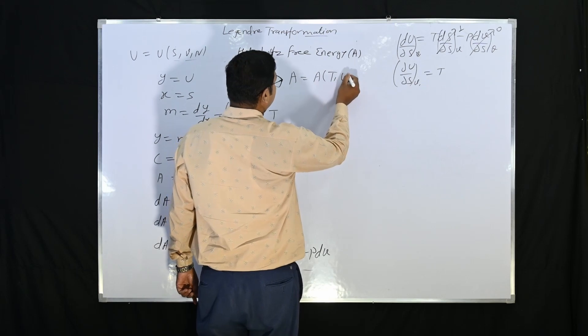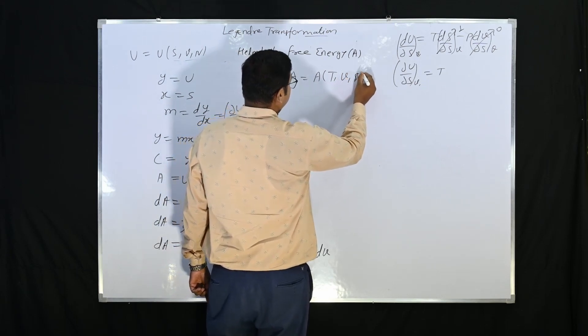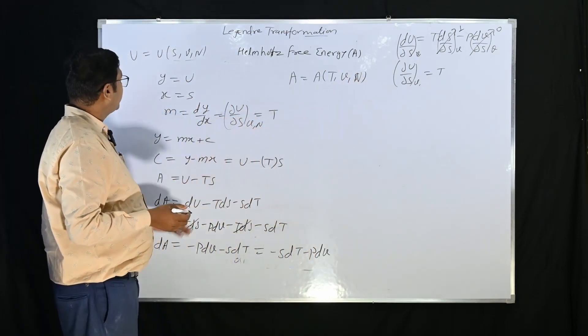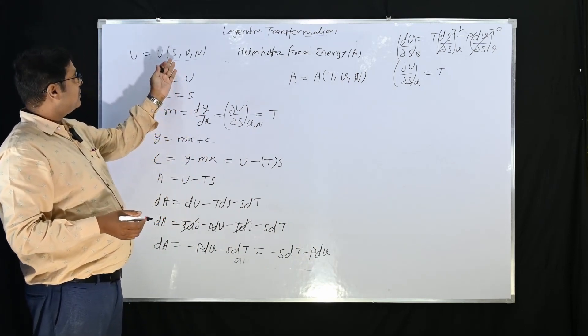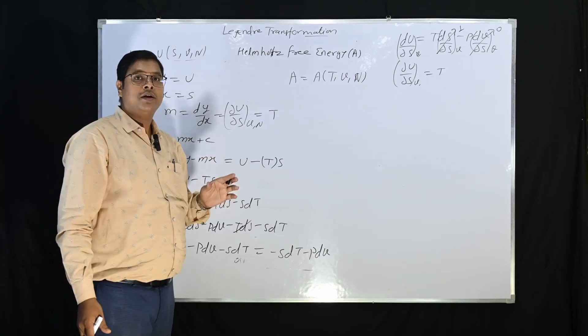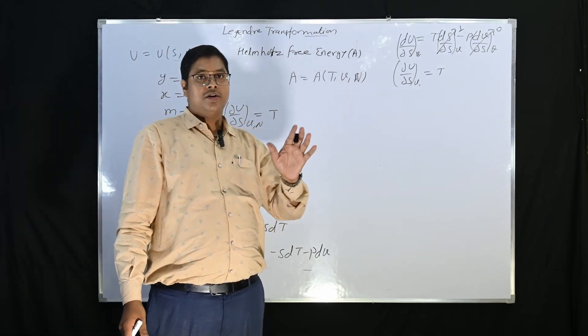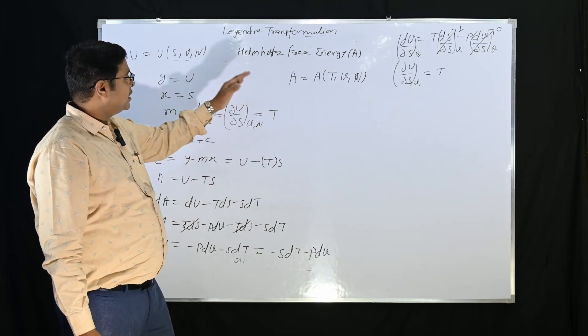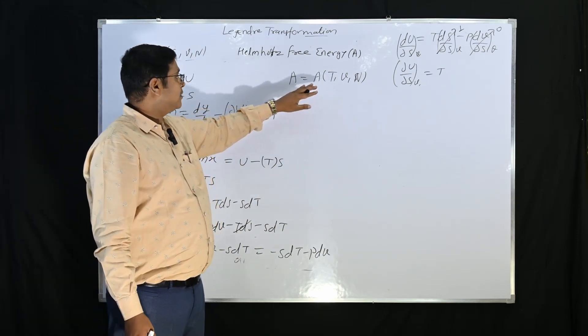So A is a function of T, V, and if N is there then N. So here we can see the same energy representation when I am changing this non-measurable property because entropy we cannot measure directly. So this entropy is measured in the form of temperature.